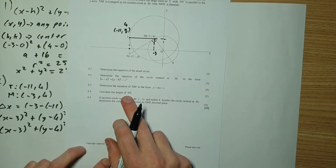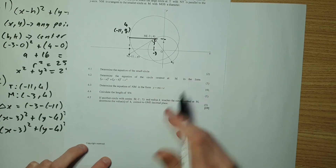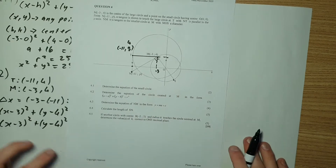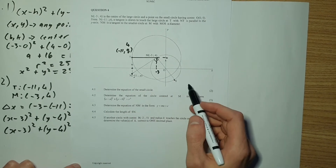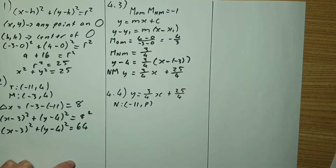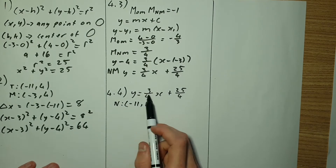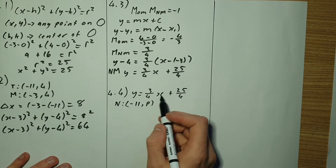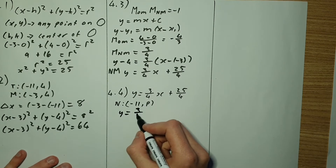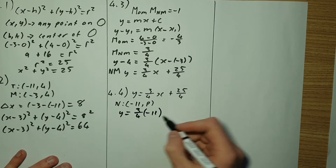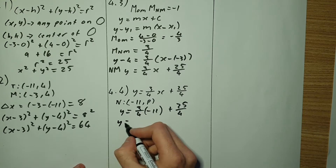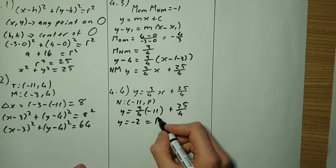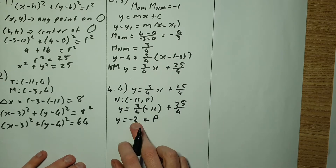Looking at 4.4: calculate the length of SN — from here to here. We first need to find the point N and then find S, then plug into the distance formula. We plug negative 11 into x in the equation of NM: y equals 3 over 4 times negative 11 plus 25 over 4. Working that out gives y equals negative 2, which equals P. Now that I have P, I have the coordinate for N: negative 11 and negative 2.